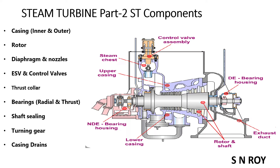In this section, which is part 2 of the steam turbine presentation, we will be discussing the various components of the steam turbine and their function. These components include inner and outer casing, turbine rotor, diaphragms and nozzles, emergency valves and control valves, thrust collar, bearings which include radial as well as thrust bearing, shaft sealings, turning gear and casing threads.